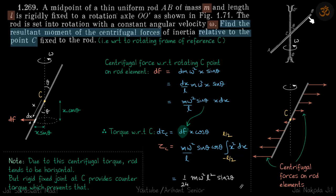We have this rotating rod that's rotating about this axis with constant angular velocity omega. We need to find the resultant moment, that is, the resultant torque of the centrifugal forces relative to point C. Now point C is here, so what we need to calculate is with respect to rotating frame of reference C.